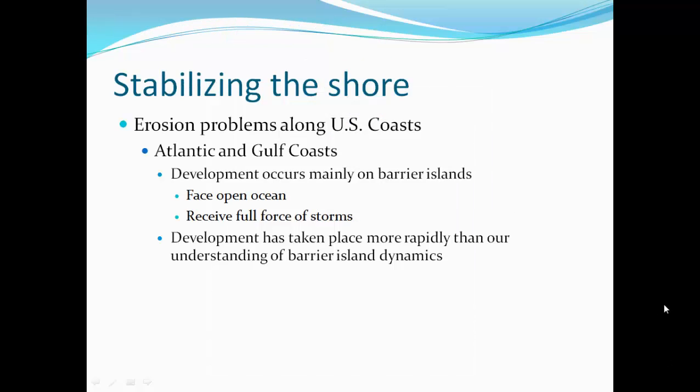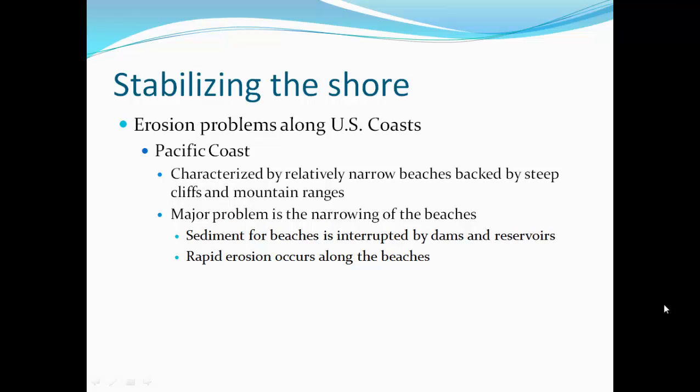The Atlantic and Gulf Coast development occurs mainly on barrier islands that face the open ocean and receive the full force of storms. This development has taken place more rapidly than our understanding of barrier island dynamics. These barrier islands protect our inner shorelines, yet we've built upon them instead of allowing them to serve that protective function.